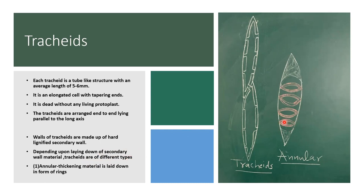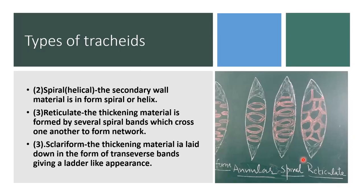If thickenings are present in the form of rings, it is called annular. If thickenings are present in the form of a spiral, the tracheids are called spiral. If these thickenings form a network, tracheids are called reticulate. If the thickenings are in the form of bands lying transversely — appearing like a ladder — this is called scleriform. So depending upon the thickening, tracheids are of four types: annular, spiral, reticulate, and scleriform.